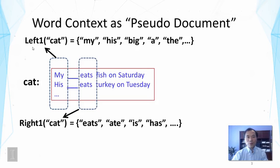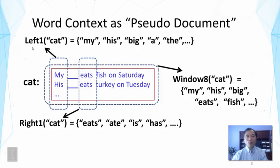Similarly, we can collect the words that occur right after the word 'cat'; we call this the right-one context. Here we see words like 'eats', 'ate', 'is', 'has', etc. More generally, we can look at all the words in a window of text around the word 'cat' — say, a window of eight words — calling this context window-8. This gives us a bag of words to represent the context.